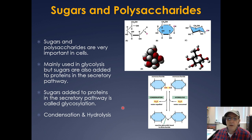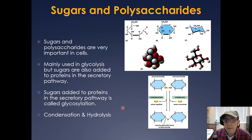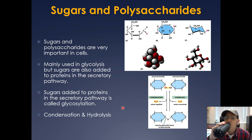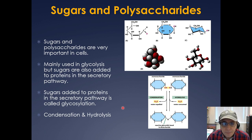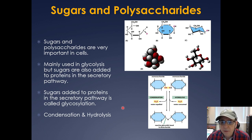Other prominent things in the cell are sugars and polysaccharides. These are mainly used in glycolysis — we use sugar as a food source. But sugars are also added to proteins in the secretory pathway, which is called glycosylation, and we'll cover that toward the end of the term.